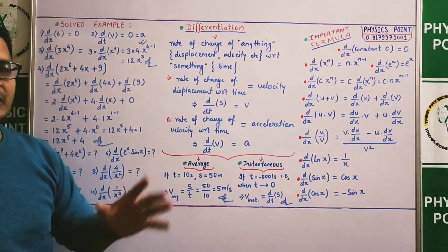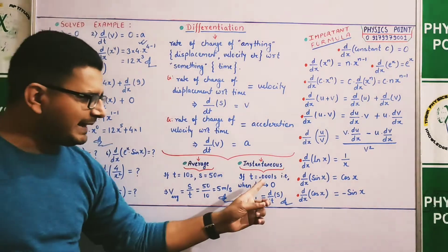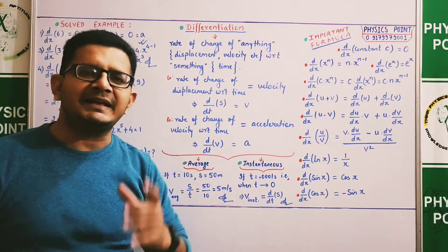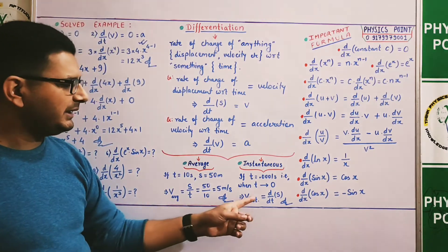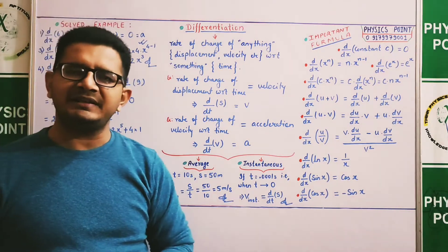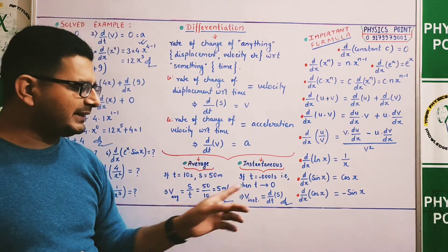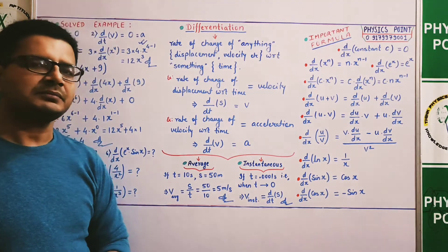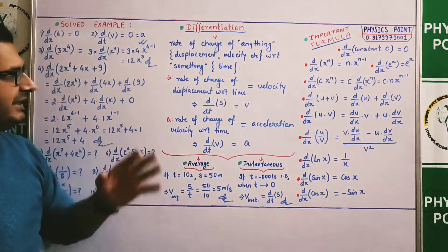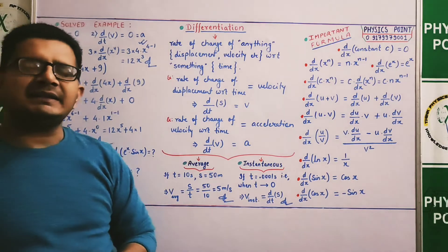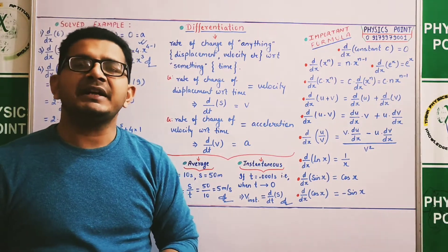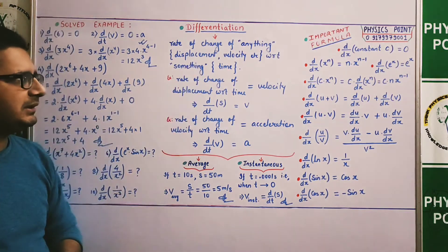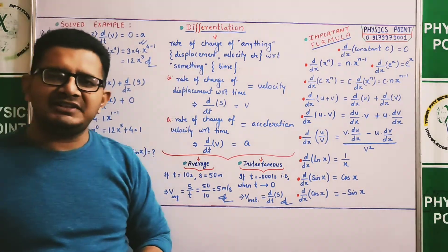यह rate of change of displacement with respect to time हमको velocity देता है। चूँकि यह time interval बहुत ही छोटा होता है — एक particular instant होता है — इसीलिए हम इस velocity को, जिसको differentiation की मदद से define करते हैं, instantaneous velocity कहते हैं।